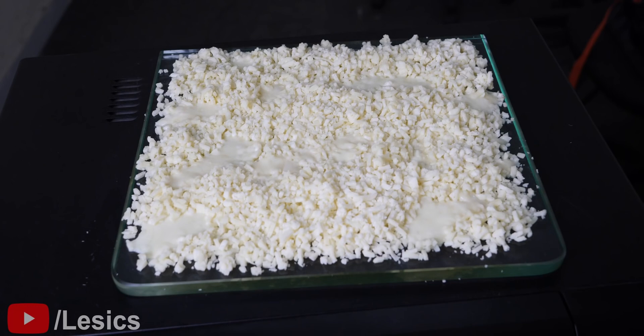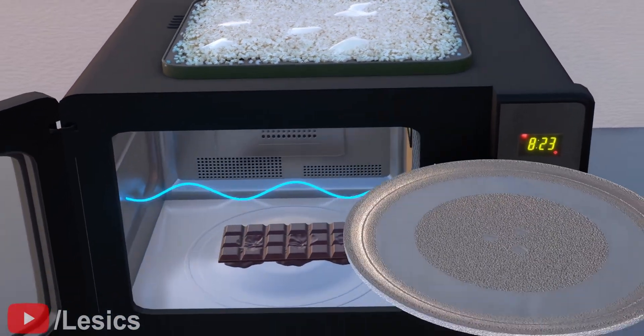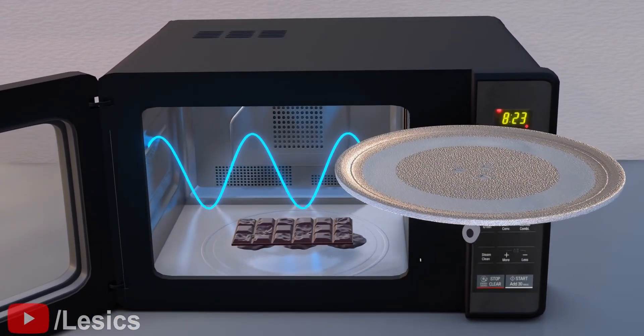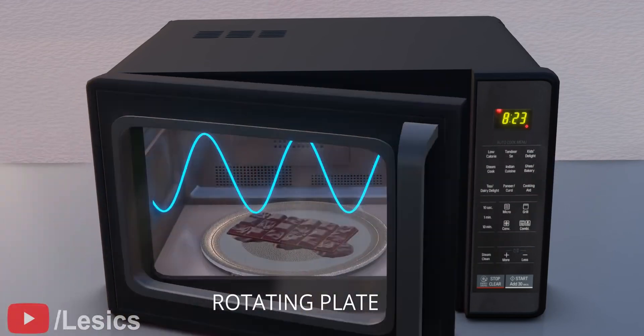In short, the cavity resonance technique we use to trap the microwaves more efficiently has led to creation of cold and hot spots. To overcome this problem nowadays, a microwave consists of a rotating plate, which helps the food cook evenly.